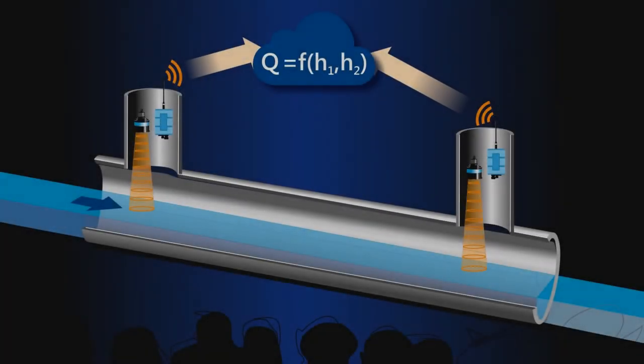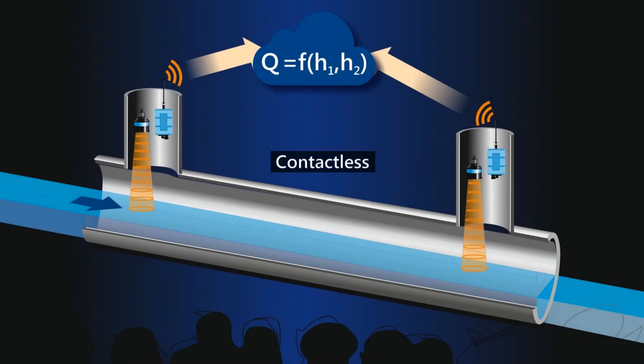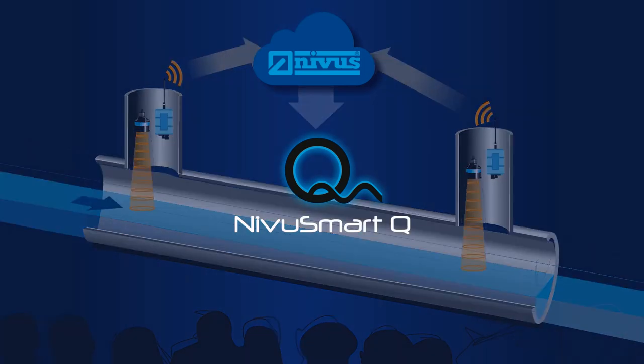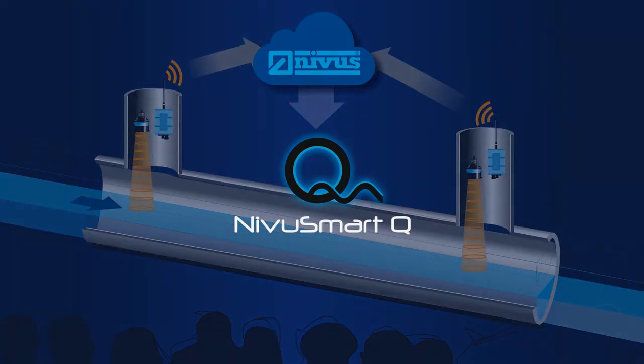NIVU SmartQ operates contactless, is independent from main supply, and automatically transmits data to an internet portal. This makes NIVU SmartQ the best possible solution for practical use.